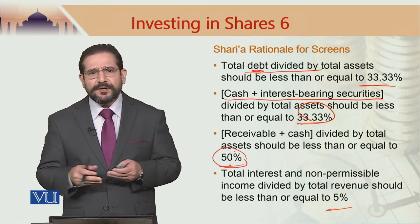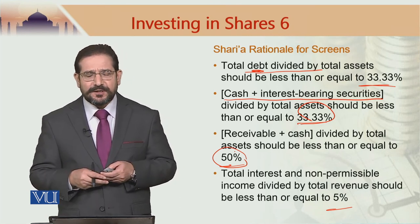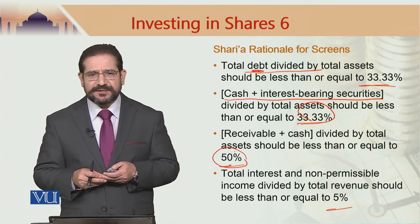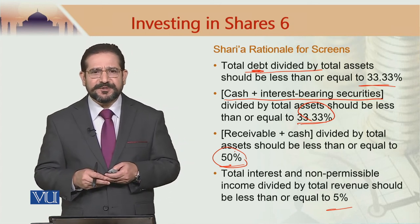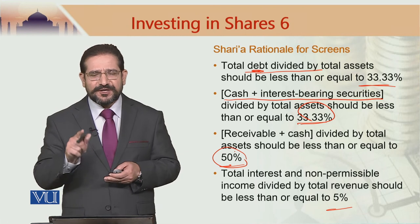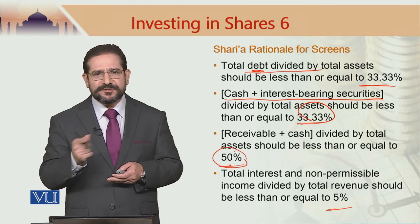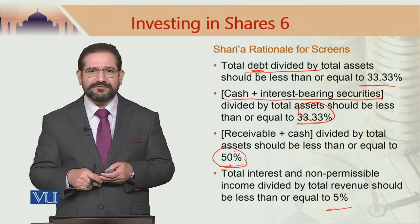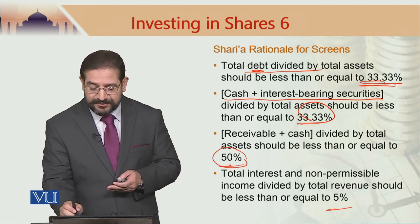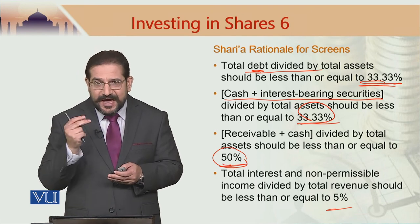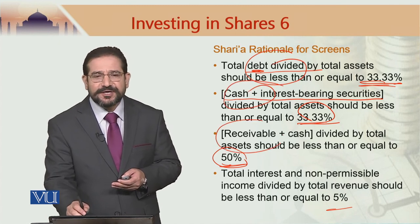The fourth one: impermissible income should not exceed 5%. This does not mean, as I explained previously, that up to 5% of impermissible income is acceptable — no. When you are investing in this company and it has 3% haram income, you must purify that income by way of giving it to charity. So these numbers — 33%, 33%, 50% — have a sharia rationale, and these ratios have a sharia rationale as well.